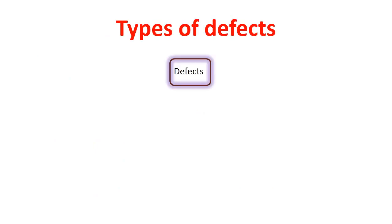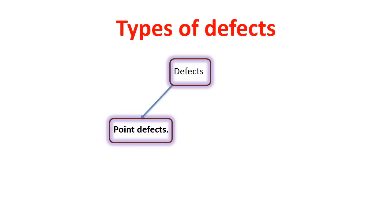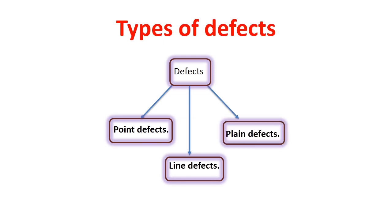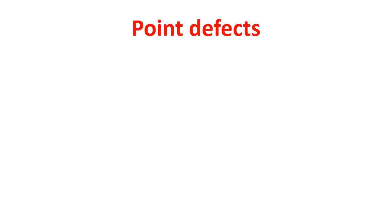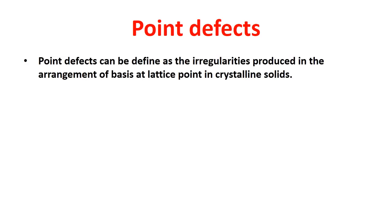Defects can be classified into three types: first is point defect, second is line defect, and third is plane defect. In this chapter, we will learn only about point defects. A point defect can be defined as the irregularities produced in the arrangement of bases at a lattice point in a crystalline solid, or as irregularities from the ideal arrangement around a point or an atom in a crystalline solid.